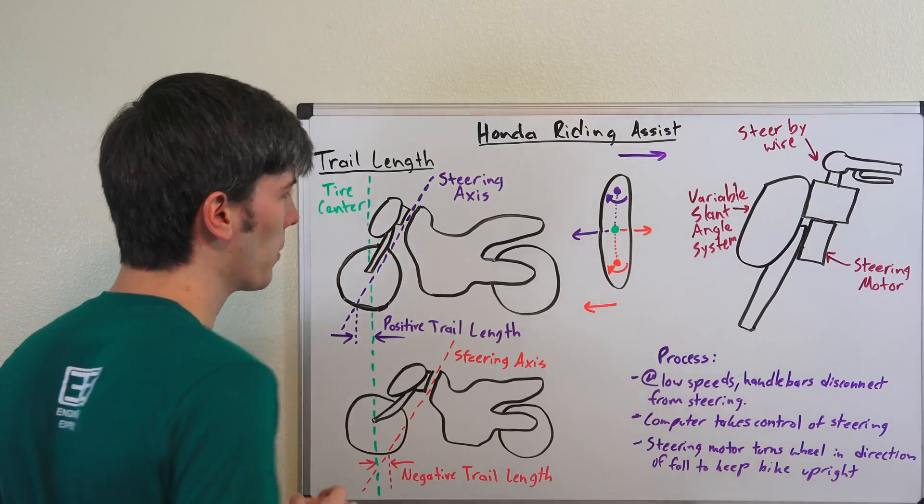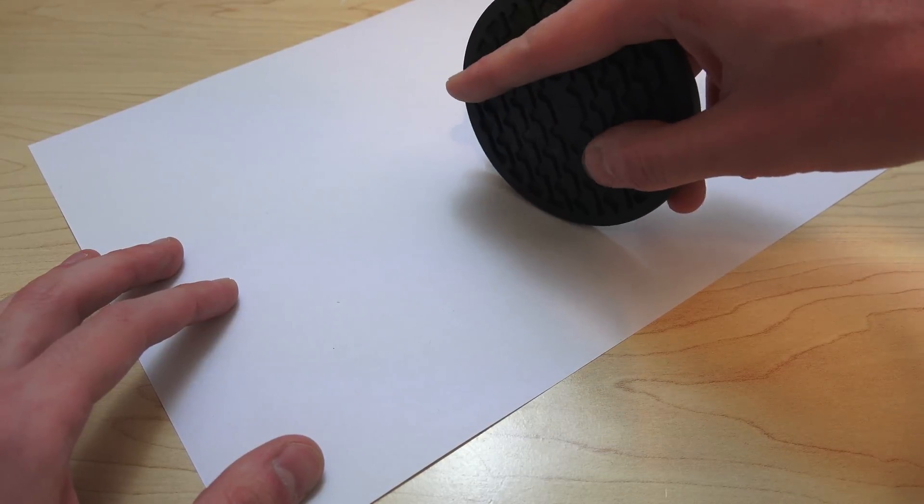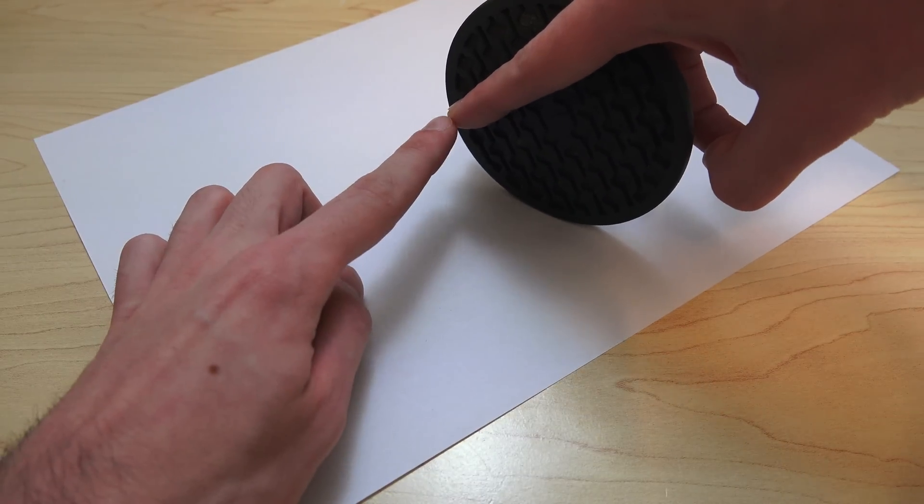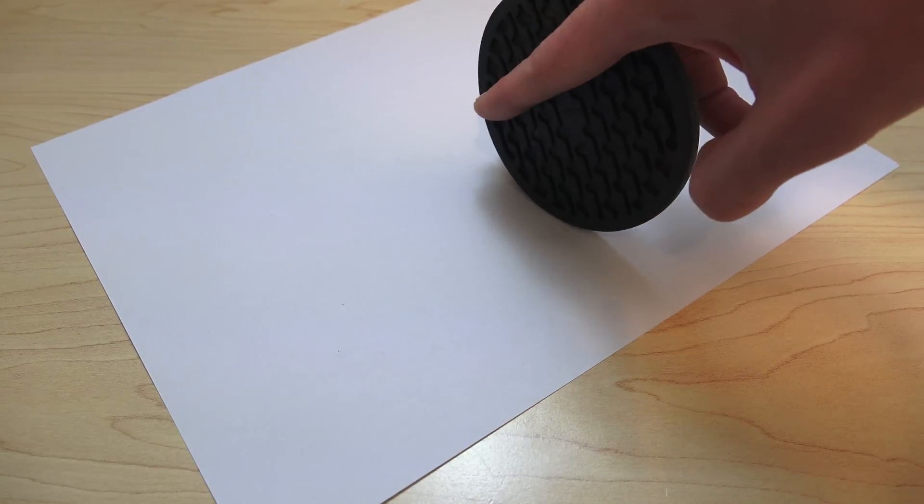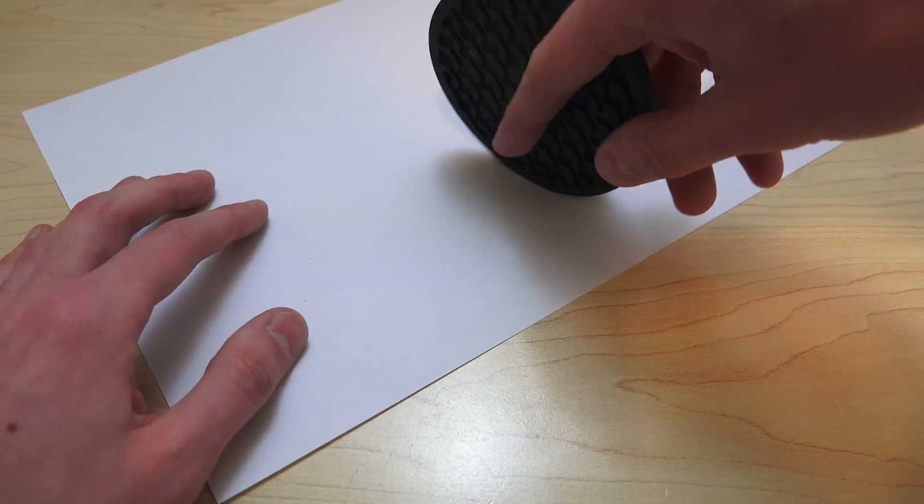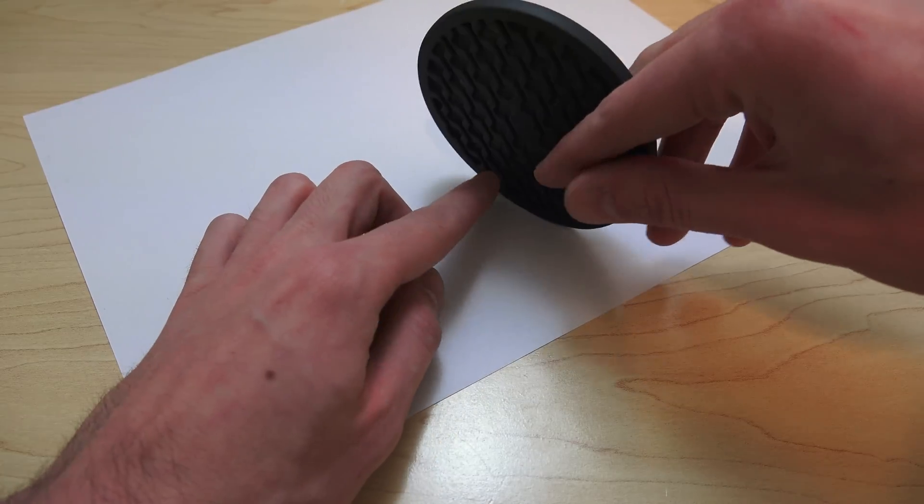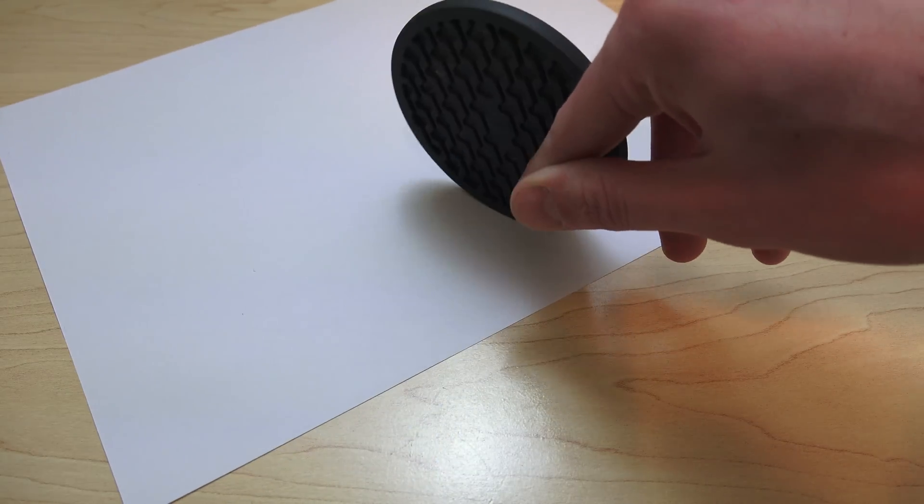Here's a simple demonstration using a coaster and a sheet of paper. With positive trail length, the pivot point is ahead of the center of the tire. If I rotate that, it moves the sheet of paper to the left. With negative trail length, the pivot point is behind the center of the tire, and when you rotate it, you move the sheet of paper to the right. This is what Honda is actually doing with their bike.